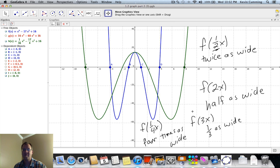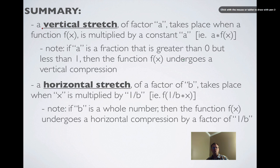In summary: a vertical stretch of factor A takes place when the function f of x is multiplied by a constant A — so it looks like A times f of x, where A could be 2, 3, or 4. Note: if A happens to be a fraction between 0 and 1 — like 1/3, 2/3, 5/6, or 1/2 — then the function undergoes a vertical compression.